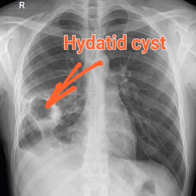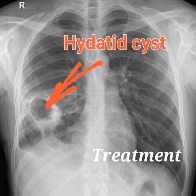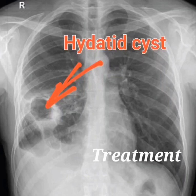The treatment for a hydatid cyst of the lung depends on the size and location of the cyst, as well as the patient's overall health. In some cases, the cyst can be treated with medication. However, surgery is usually the preferred treatment. The type of surgery performed will depend on the size and location of the cyst. With proper treatment, most people make a full recovery, though the disease can be fatal if untreated.